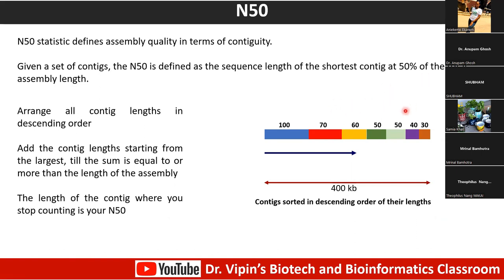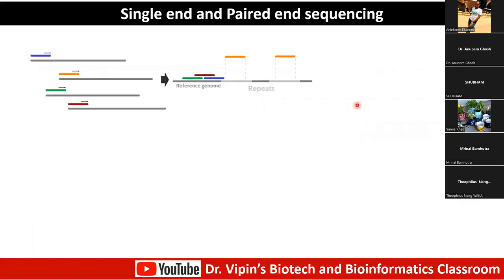You can have a library sequenced from only one end, or you could sequence from both ends — paired-end sequencing. For example, with Illumina you have a 400-base fragment but sequence only 150 bases from each end. If reads from a paired-end library align further apart on the reference than expected, this indicates a structural variation — possibly a repeat insertion or insertion-deletion polymorphism in the reference genome.